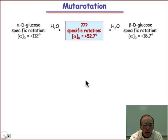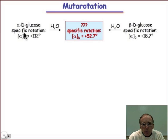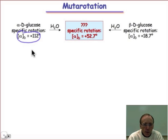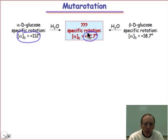The way that this can be tracked is by the process of specific rotation. Specific rotation is a characteristic property of a pure compound. So if you were to take pure α-D-glucose, a solution of that would have a specific rotation of 112 degrees, but over time that would evolve to a value of 52.7.